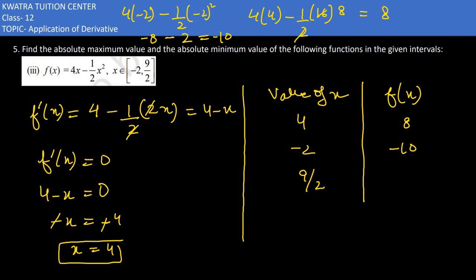Next value mein aapne kya put karna hai? You need to put 9 by 2. So 4 into 9 by 2 is there. X ki jagah 9 by 2 put karo ge, then half is there, x ki jagah 9 by 2 put karo ge. So you have 2 se 4 cancel, 18 aagaya. We have 18 minus 81 divided by 8. Simplifying this, you would get the result as 7.875.